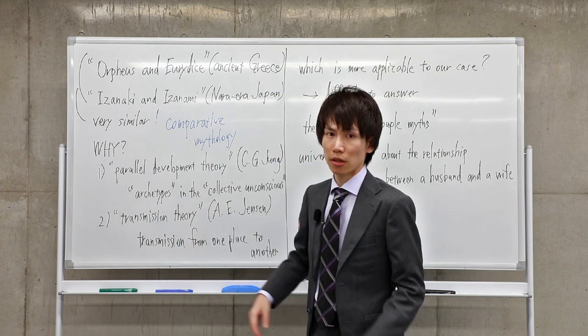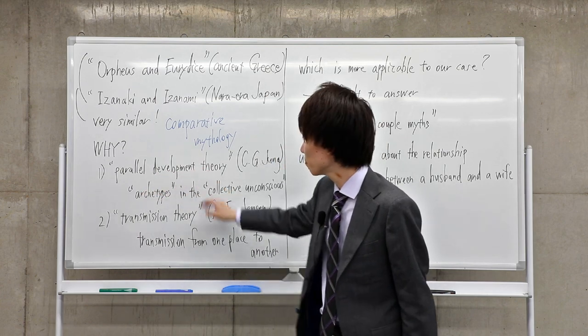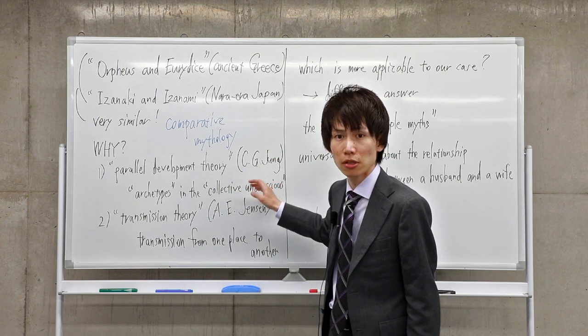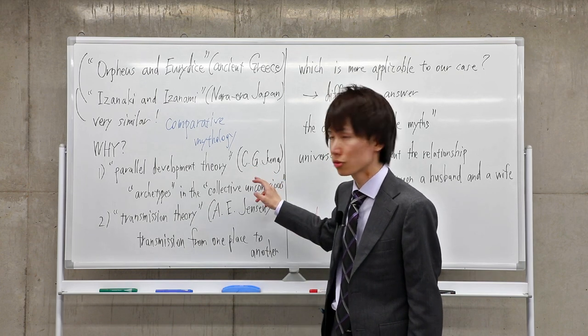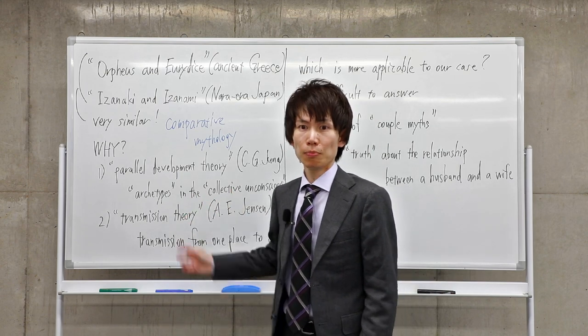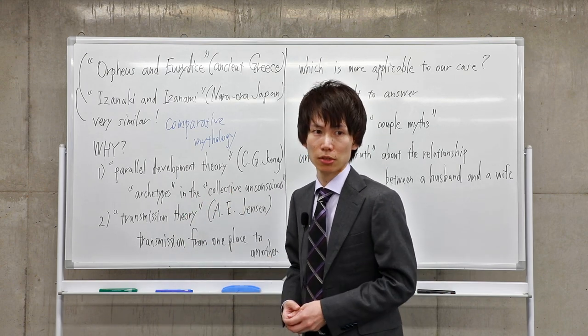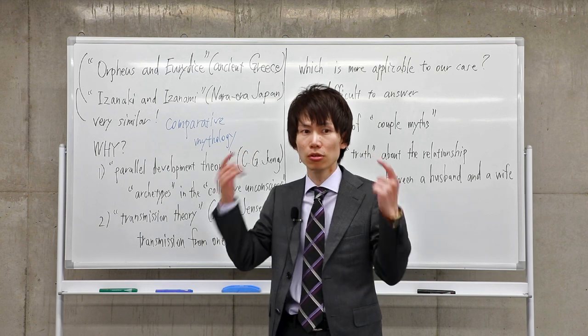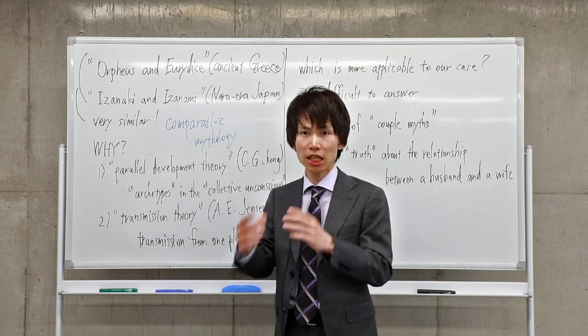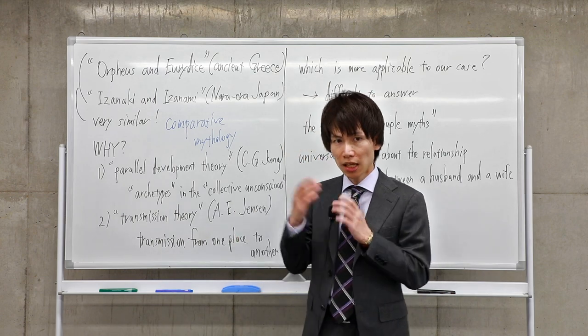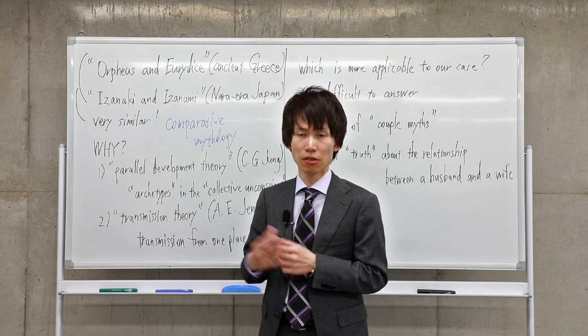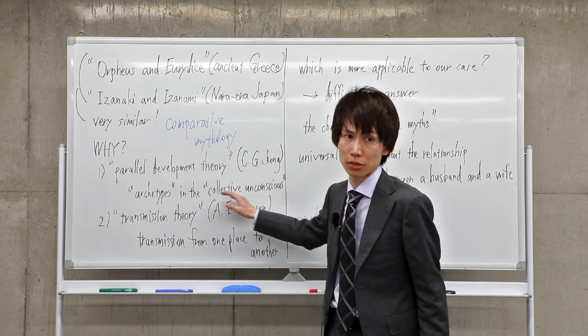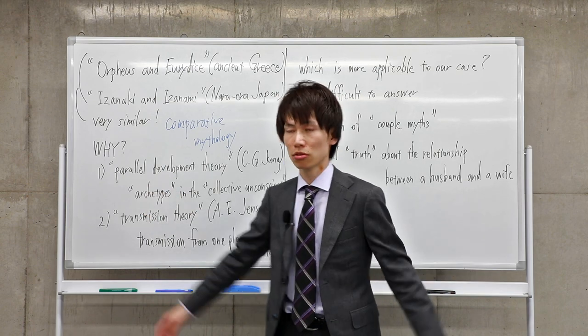I'm going to explain the first one, parallel development theory. This theory is proposed by the famous psychologist Carl Gustav Jung. He was an Austrian psychologist and a pupil of Sigmund Freud. Freud is famous for his idea of the personal unconscious, the unconscious found in each individual. But against his teacher's theory, Jung proposed the collective unconscious shared among all human beings.